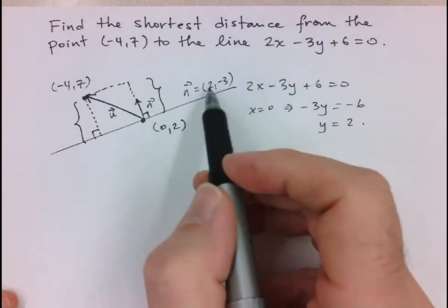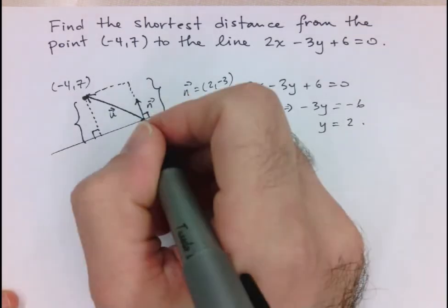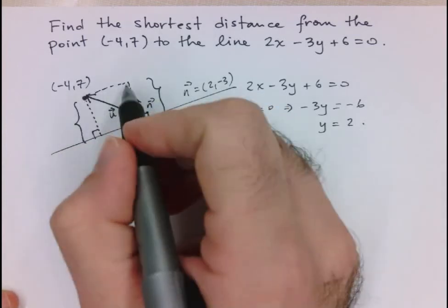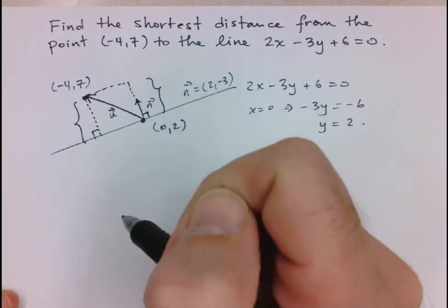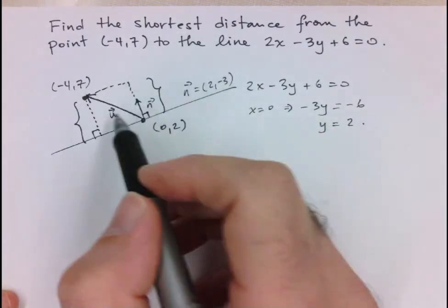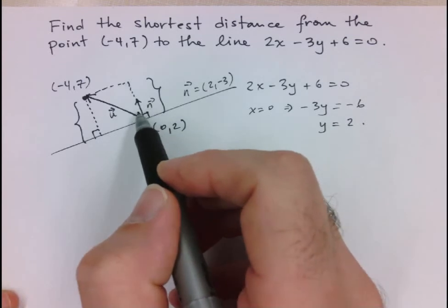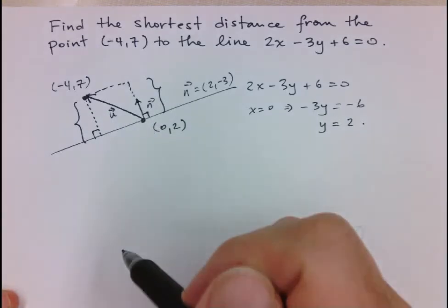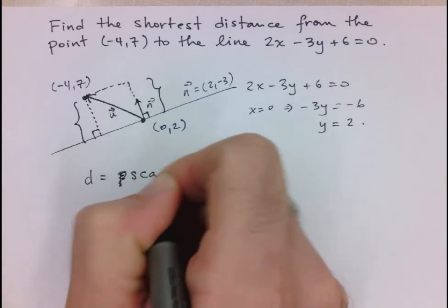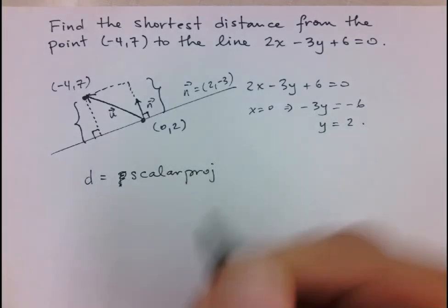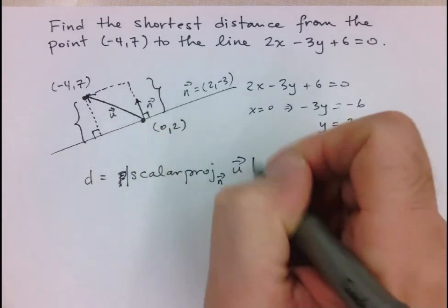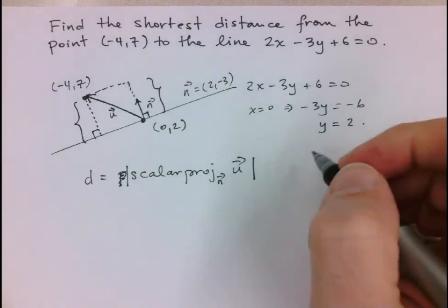We have to be careful. If I think of this as being the Cartesian plane, 2, negative 3 will most likely have been going in the other direction. The projection of u onto that vector would still be the same vector, but the scalar projection would be negative. So what I want to do is not just take the scalar projection of u onto n, but take the absolute value — in case that ends up being a negative number, since I'm looking for a distance, I just want the positive version.